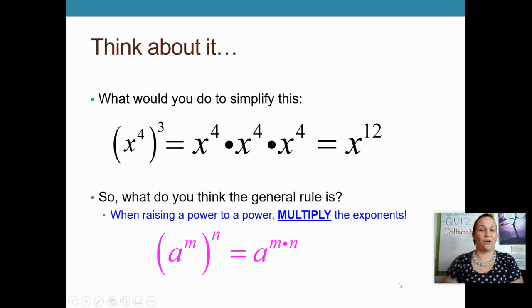And here it is written as a generic rule. So a to the m to the n is a to the m times n. And if I wanted to replace the very long written out problem, I could replace it with just four times three. Okay, so this is our first rule for today.